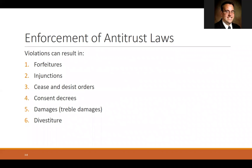So if you violate antitrust laws, there are six ways that the government can sort of punish you. The first is what's called a forfeiture, which means you have to give up something — usually the earnings you made through your anti-competitive behavior. That's what a forfeiture would be, usually cash, but sometimes other things.